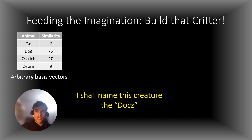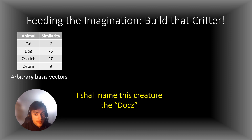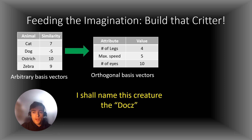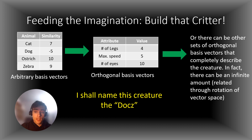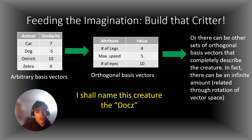So in an abstract, geometrical way, we can represent the docks as a single vector that resides in a particular subset of what we would call animal space. As revealed by the orthogonal basis vectors right over here, this space that we're working in is actually three-dimensional. We have chosen a specific set of basis vectors, but theoretically there could actually be an infinite number of basis vectors. And if we're talking about orthogonal basis vectors, then these different sets are actually related through rotation of the space, as well as scaling of the vectors.